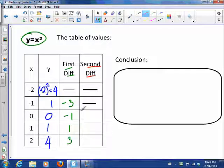But let's look at what happens with the second differences. So the difference from negative 3 to negative 1 is negative 1 minus negative 3, which is 2. 1 minus negative 1 is 2. 3 minus 1 is 2. Well, the second differences all look like they're the same.